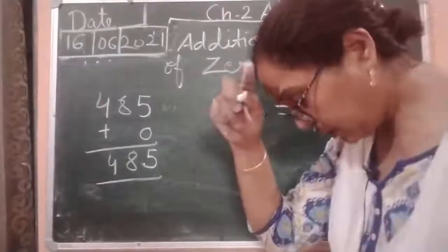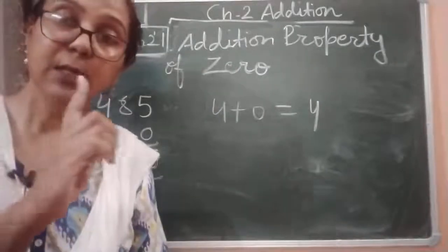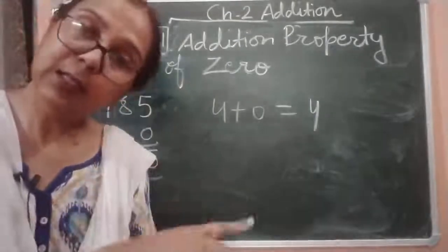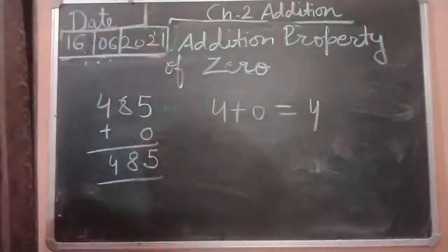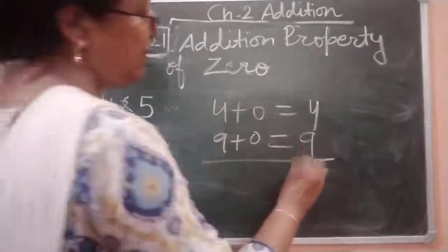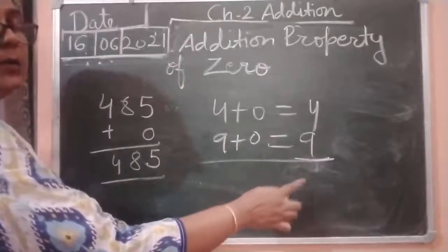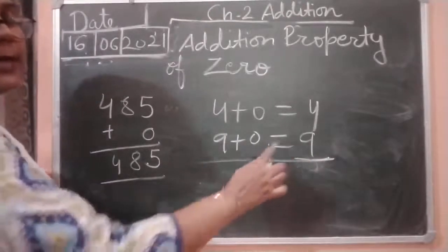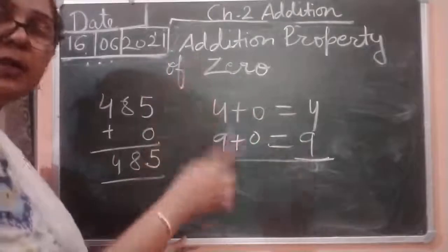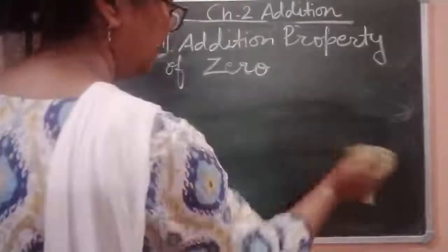So always remember: when we add zero with any number, our sum remains that same number. The sum of that total — when zero is added to a number or a number is added to zero — the sum is the number itself. So that is very important for you to learn. Here we have discussed the zero property, and now we are moving to exercise number 2.4.